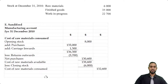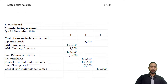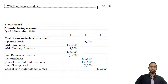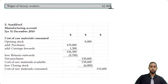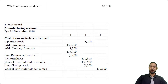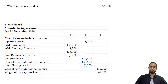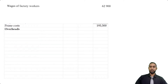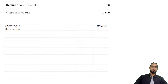We then add the wages of factory workers of $62,900 — that's direct labor. Those are the only two direct items; there were no other direct expenses. Totaling those up gives us a prime cost of $195,500.